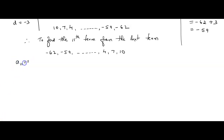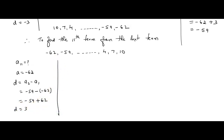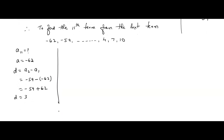The 11th term equals question mark — we have to find it. According to the reversed sequence, minus 62 is now the first term. The common difference is a2 minus a1: minus 59 minus (minus 62) = minus 59 plus 62 = 3. So the common difference is plus 3. If you go from left to right it is minus 3; from right to left it is plus 3.